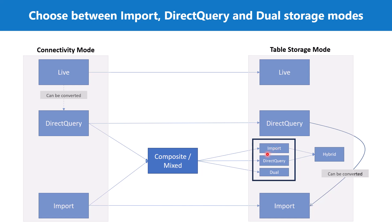The three table storage modes available inside the Power BI model view are Import, Direct Query, and Dual. If you have a combination of more than one of these — some queries in import, some in direct query, or dual — then that particular data model is called a composite or mixed model. Now let's look at each of these table storage modes and the benefits of one over the other.